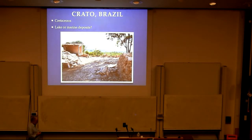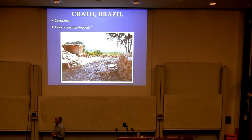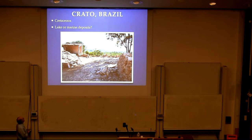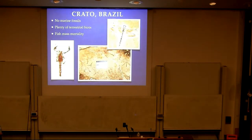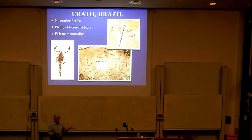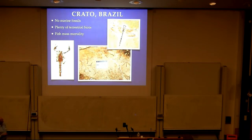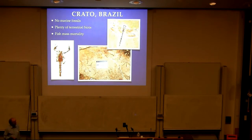Let's go to a third potentially lacustrine deposit — the Crato Formation in Brazil. Famous for fossil fish, insects, and the odd four-legged snake, and also some nice fossil spiders. This is a Cretaceous lake, so it's older. There's been some dispute as to whether this is actually a lake or some branch of the sea, as there is marine influence. Here's some of the biota: scorpion, dragonfly. Again, you get fish mass mortalities in this situation — that seems a common theme.